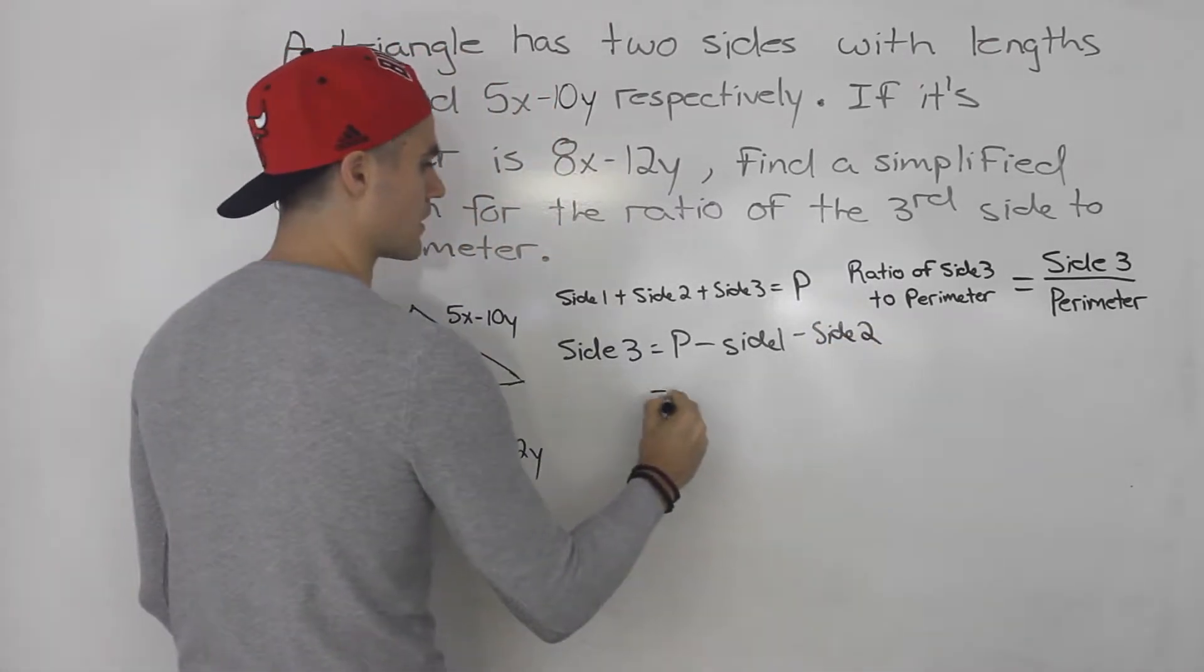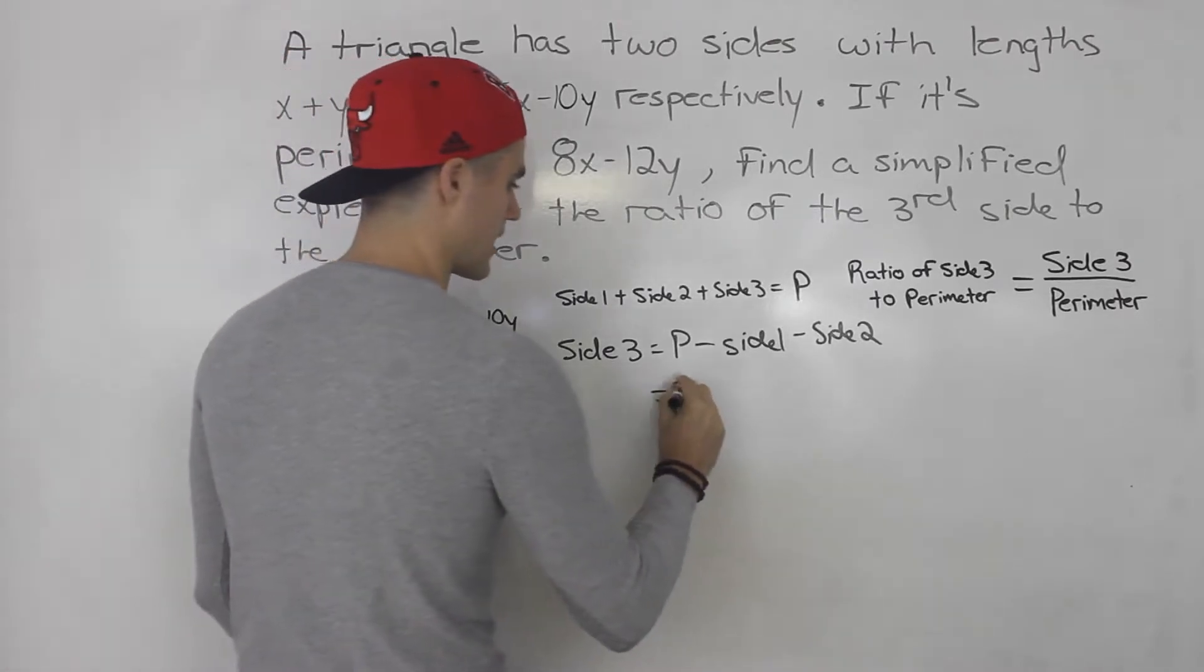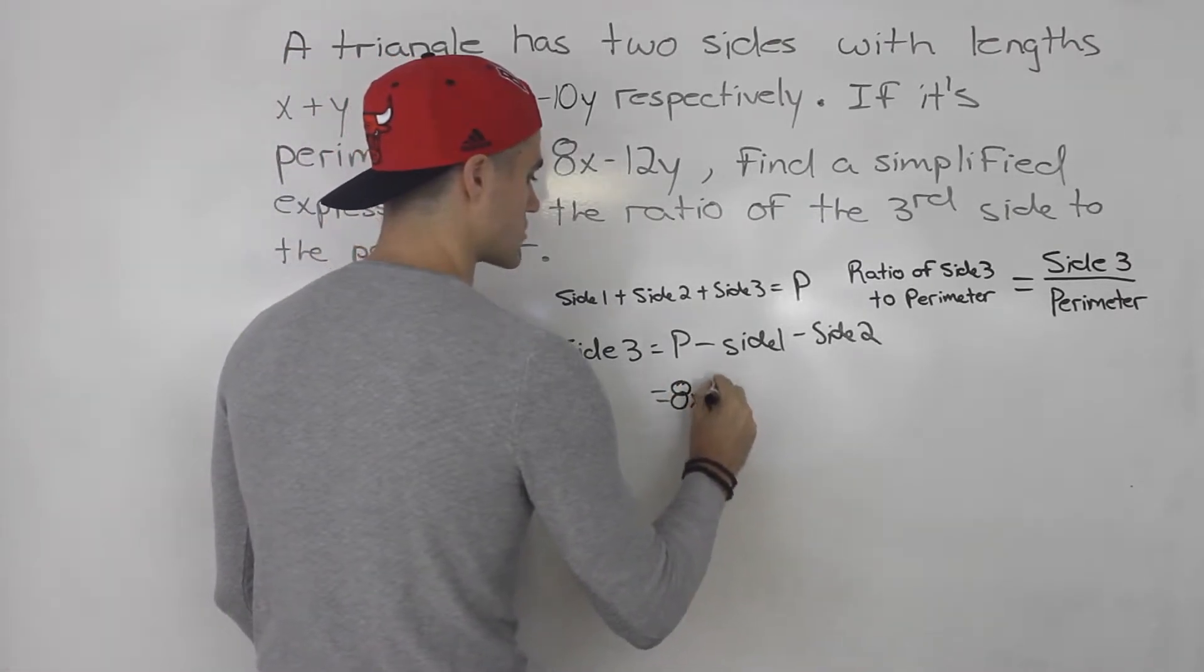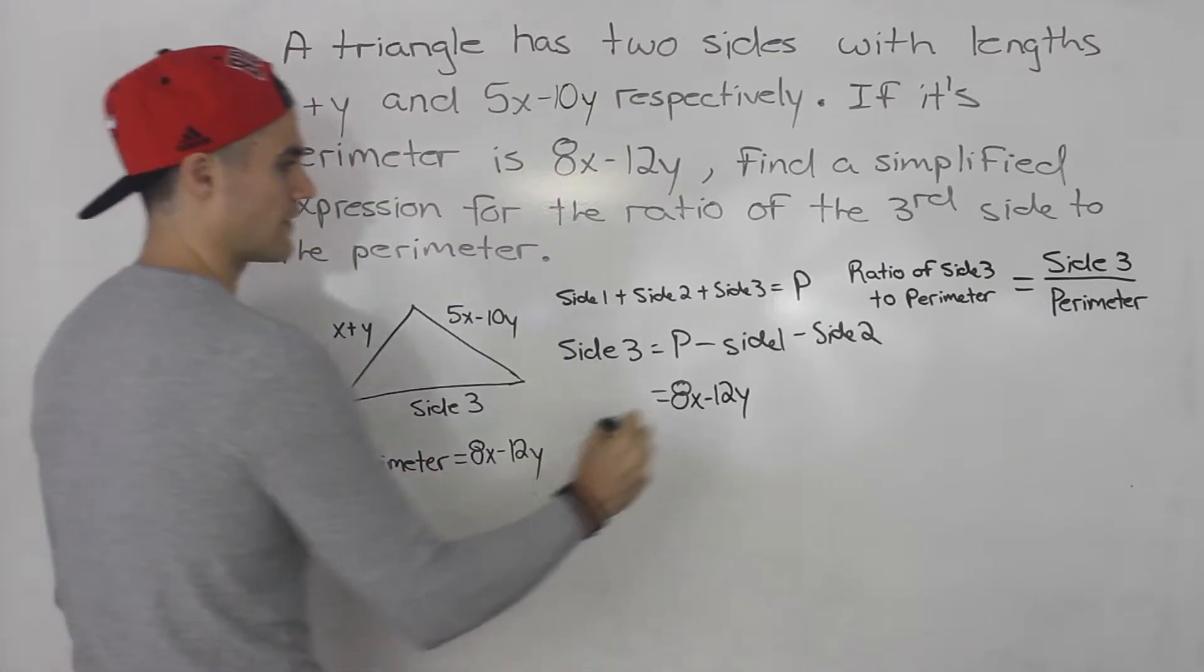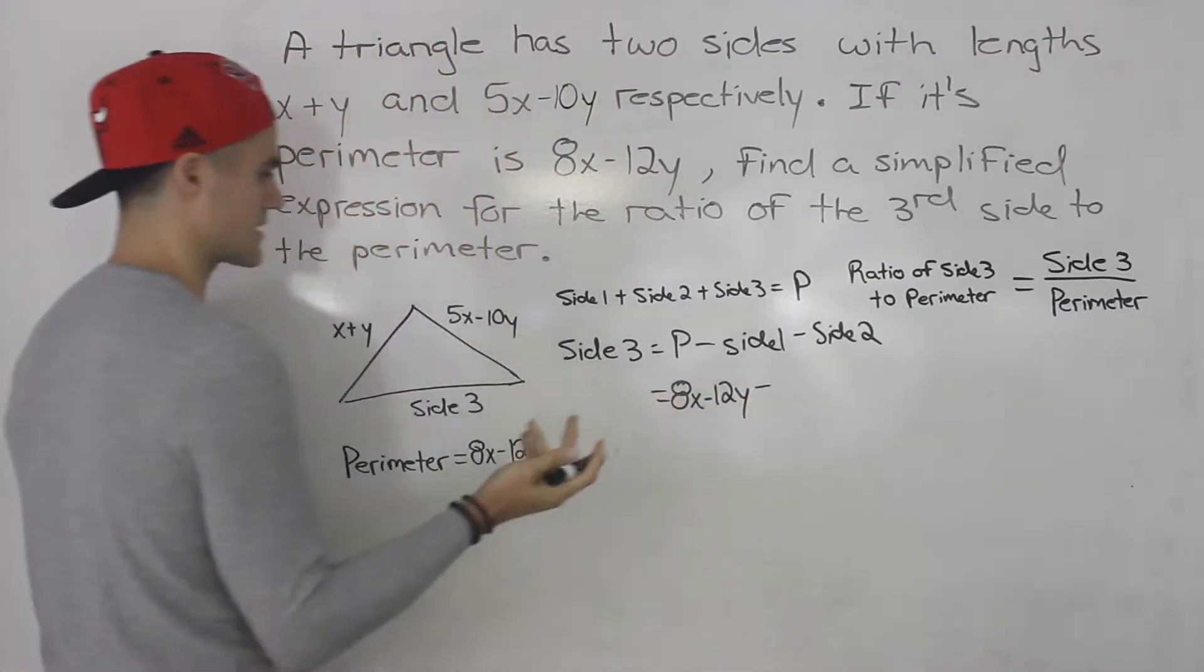Notice we could plug everything in now. So the perimeter, we're told it's 8x minus 12y. Then we're going to be subtracting side 1.